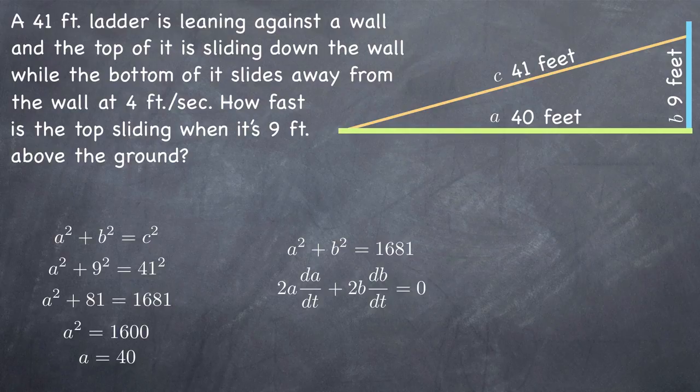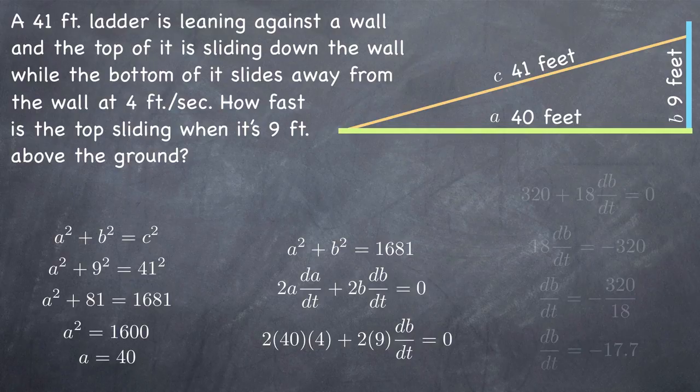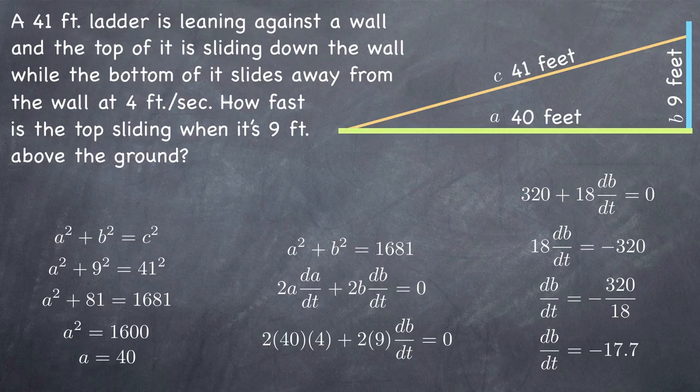Finally, we know that b, the distance between the ground and the top of the ladder, is 9. So we'll plug all those in, leaving only db dt. Then we'll solve for db dt, which is the rate at which the ladder is sliding down the wall when the top of it is 9 feet above the ground.